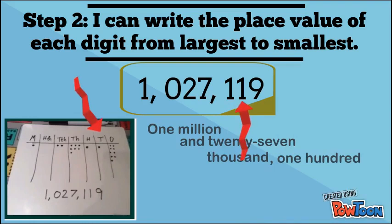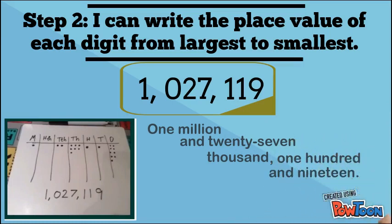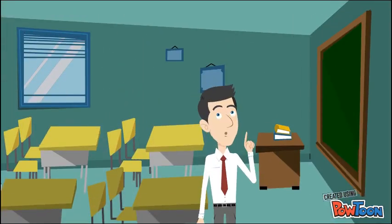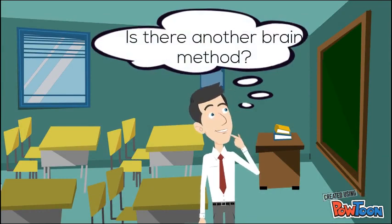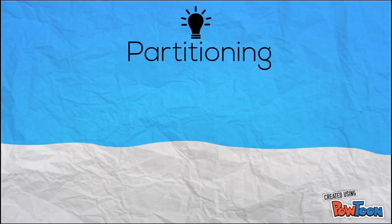And the next we know is one ten and nine, which makes nineteen. So there we have one million and twenty-seven thousand, one hundred and nineteen. But hold on — is there another method we might have to use? Yes there is. This is the partitioning method.